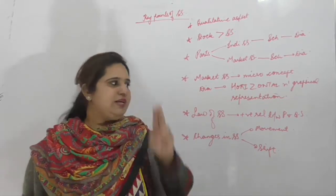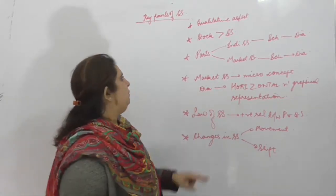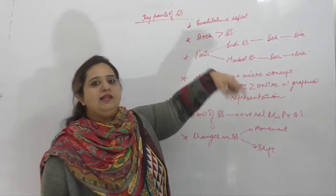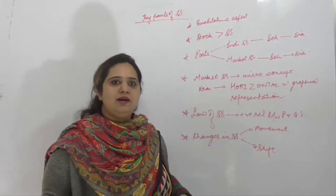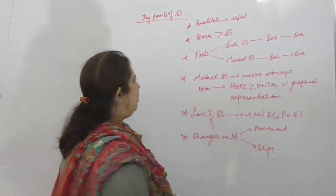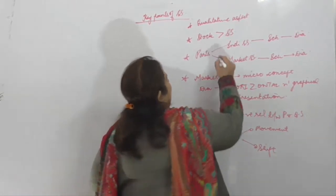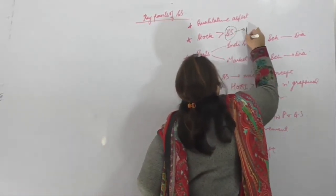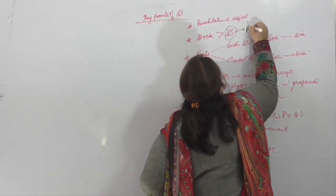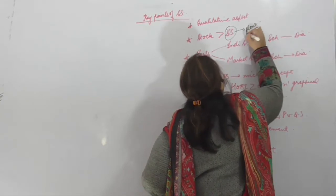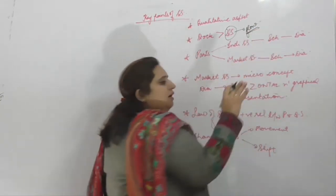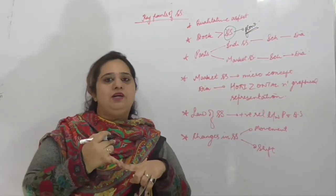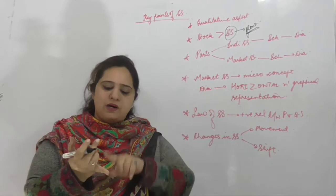यह directional change किन दो variables के बीच में है — Price and Quantity Supplied. Next question जो हमारे mind में आता है: Stock and Supply. Supply कौन सा concept है? Supply is a flow concept, but इस supply के अंदर लगातार बदलाव होता रहता है over a period of time।